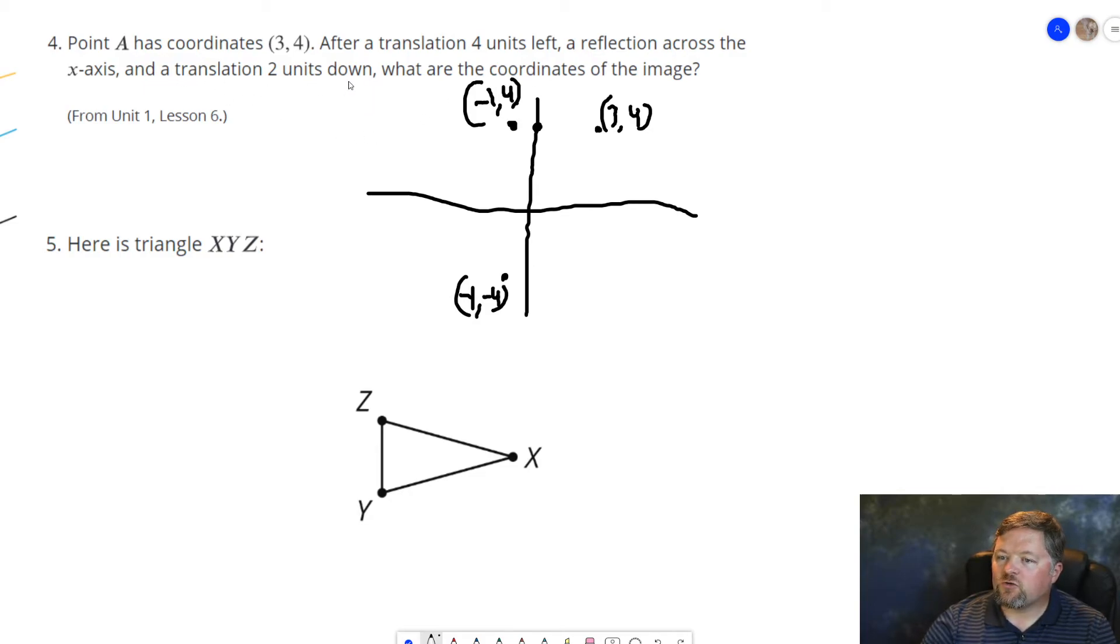Translate 2 units down. 2 units down. Negative 1, negative 4 will become negative 1, negative 6. So that is where A' should be after doing all that to it.